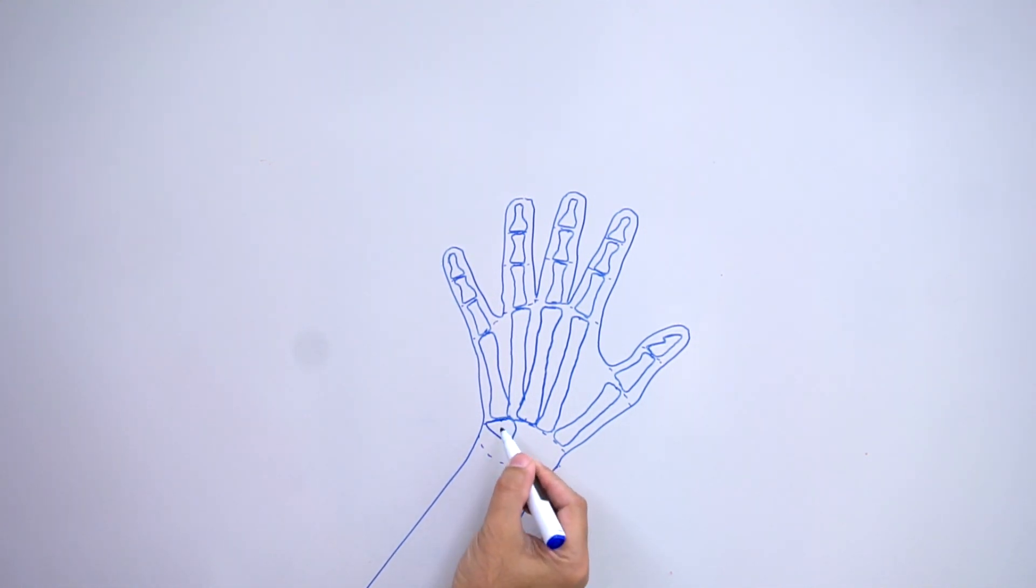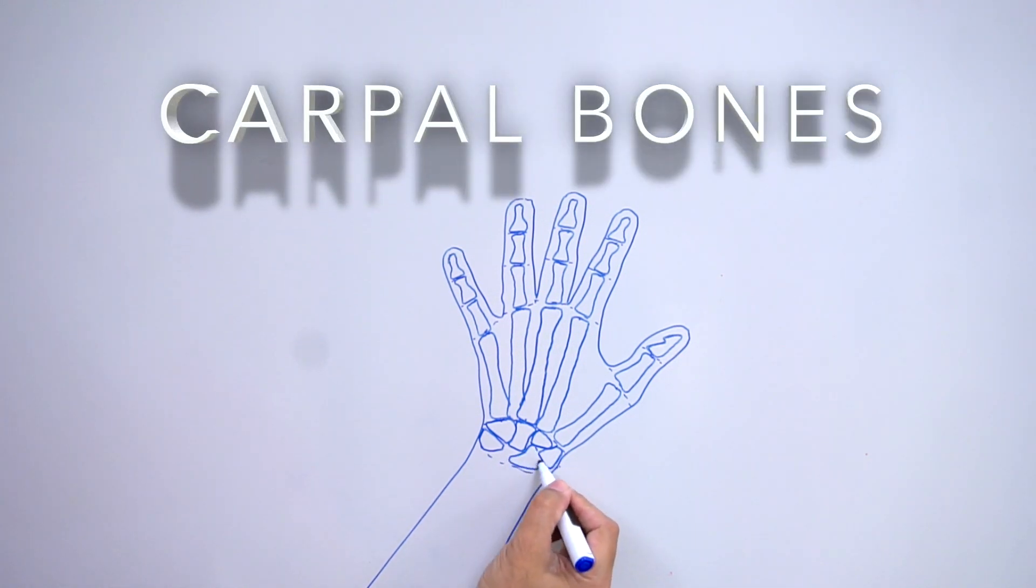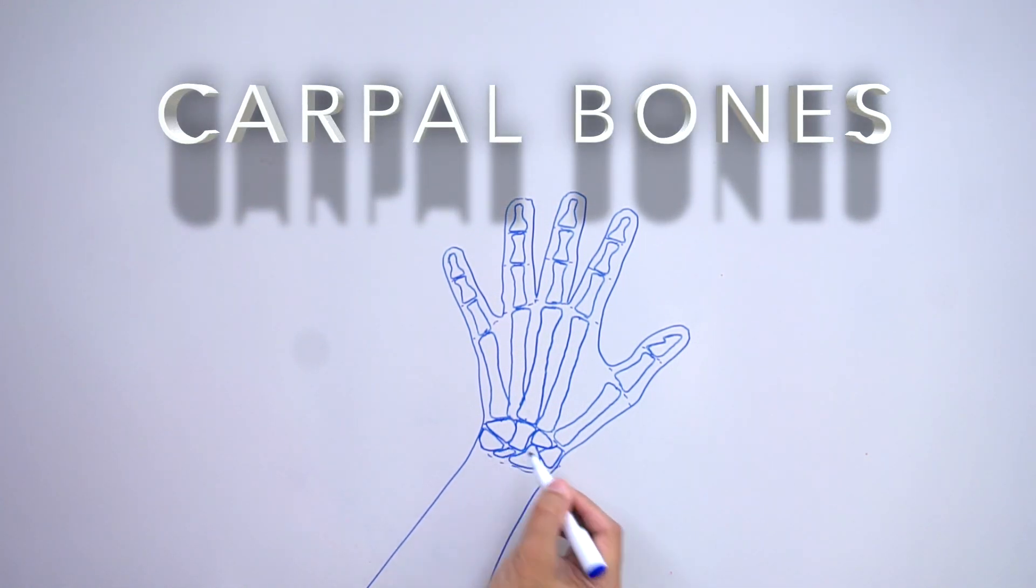We're ready to draw the wrist bones. These kind of look like pebbles, right inside that shape that we drew that looked like a football. The correct term will be the carpal bones.